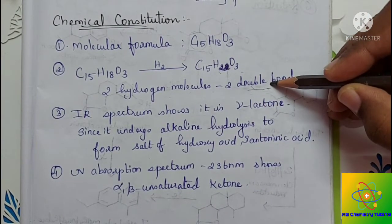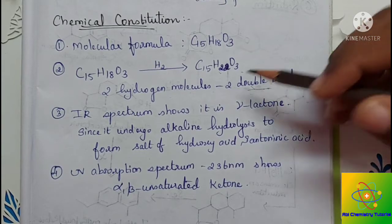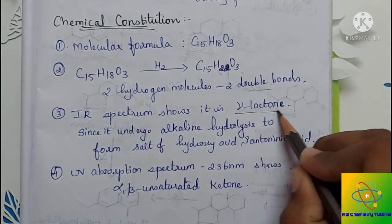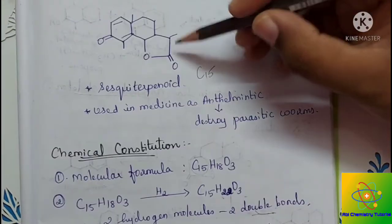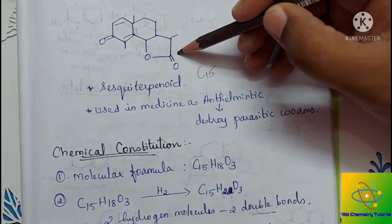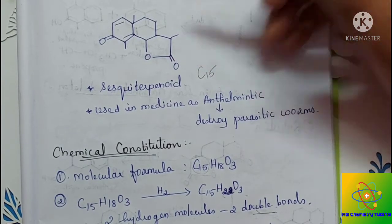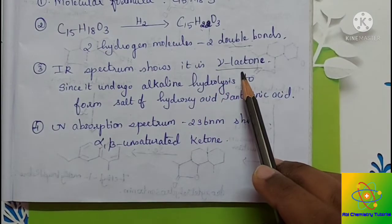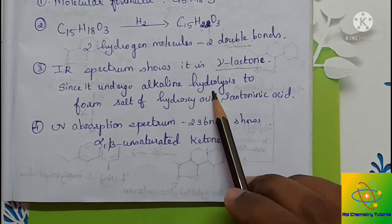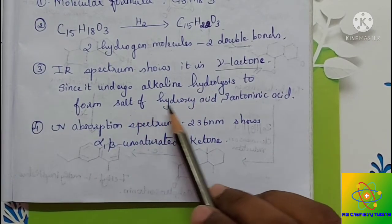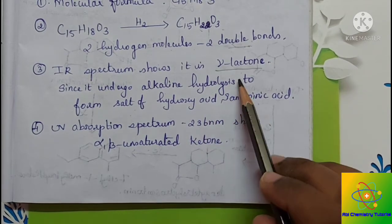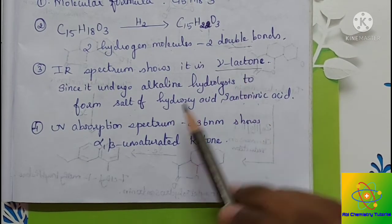Next we have spectral studies. The IR spectrum shows that it is a gamma-lactone. As you can see from this structure, this is the lactone structure. To confirm it is a gamma-lactone, they performed alkaline hydrolysis and it forms the salt of a hydroxy acid — santoninic acid — thus confirming it is a gamma-lactone.